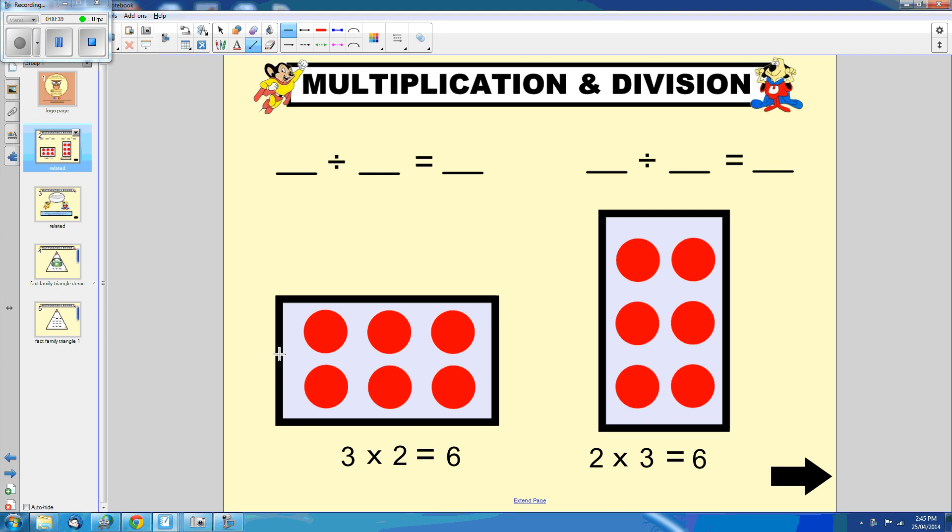So if I want to divide 6 by 2, I can draw a line here. And you can see that in the 2 groups I have created, there are 3 circles in each one. Therefore, 6 divided by 2 equals 3.